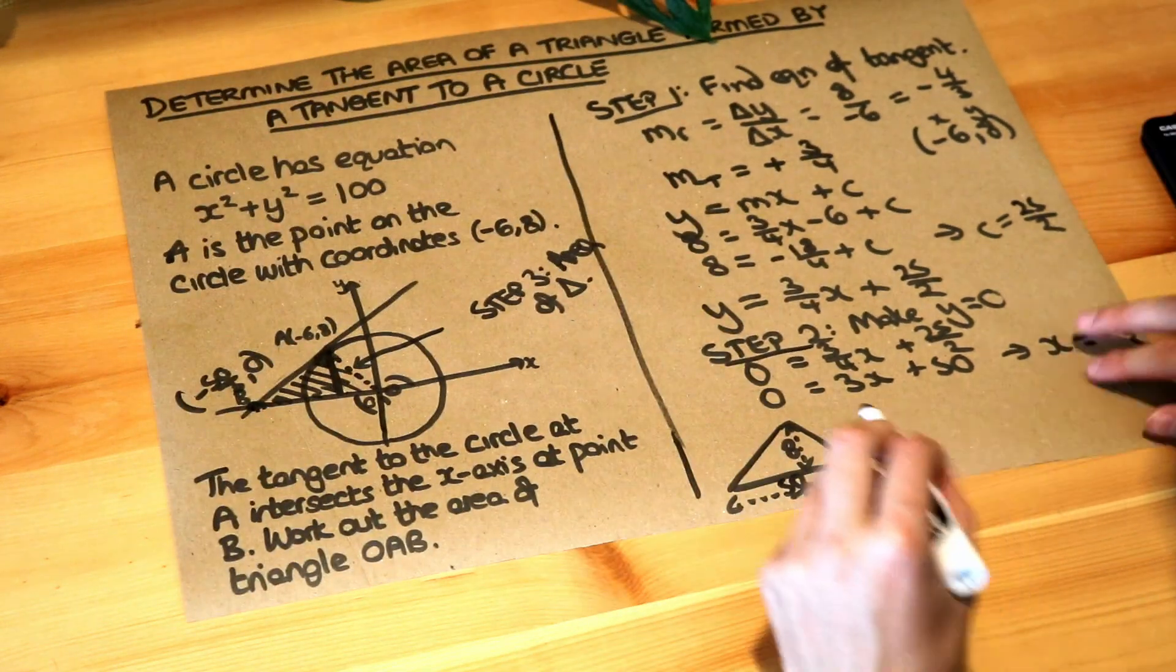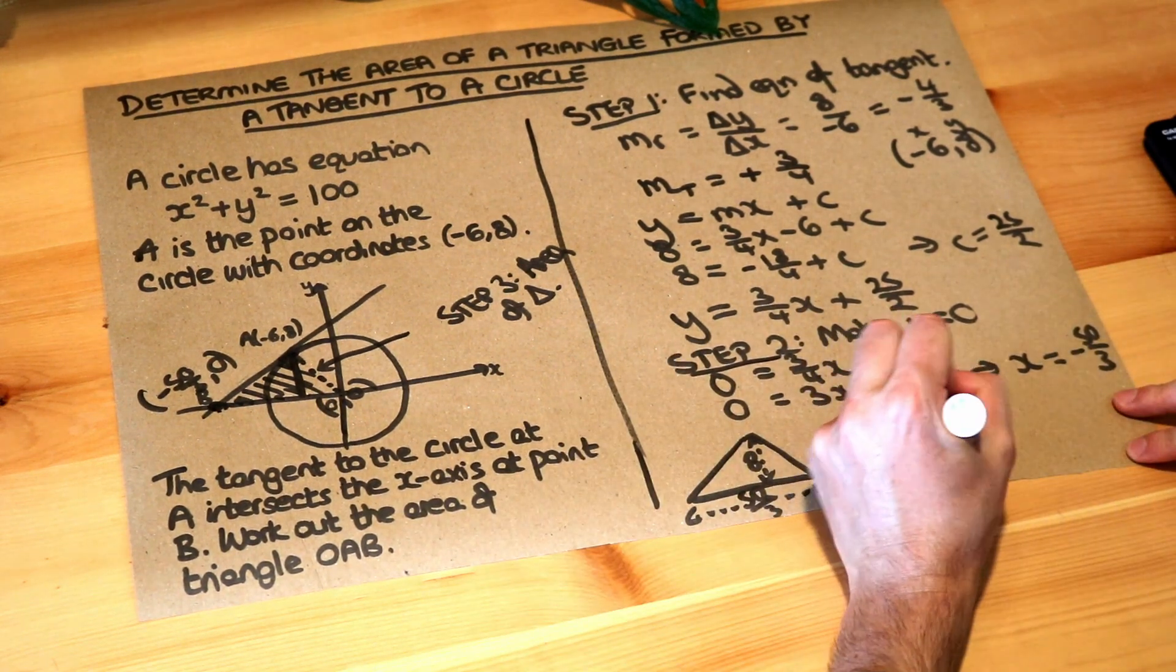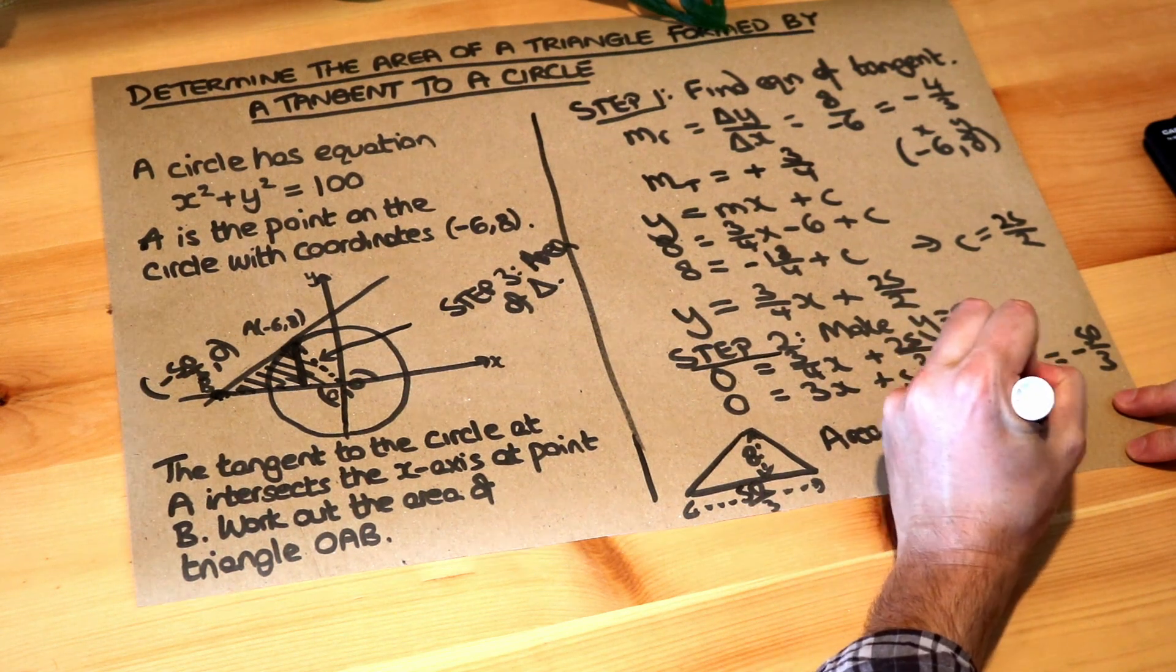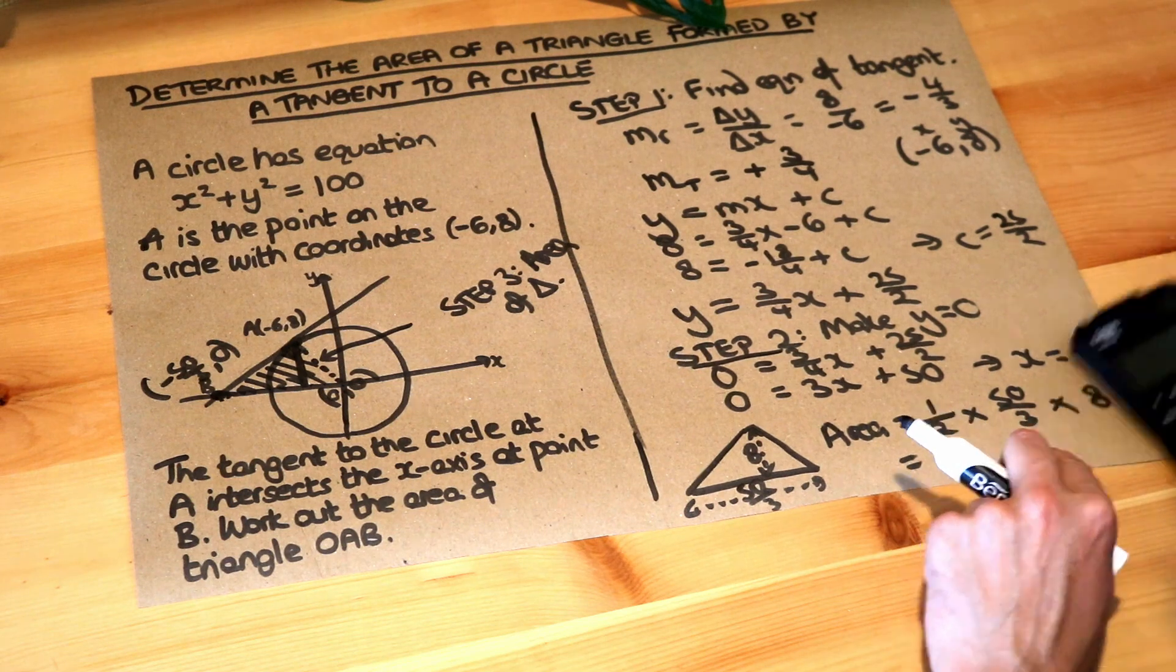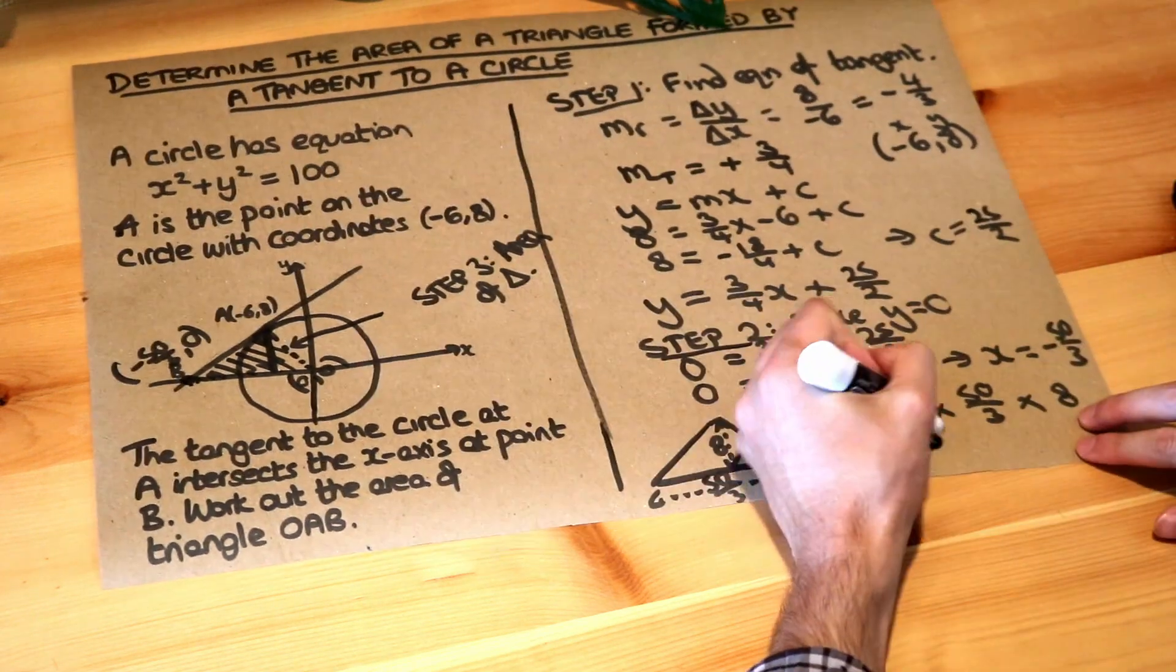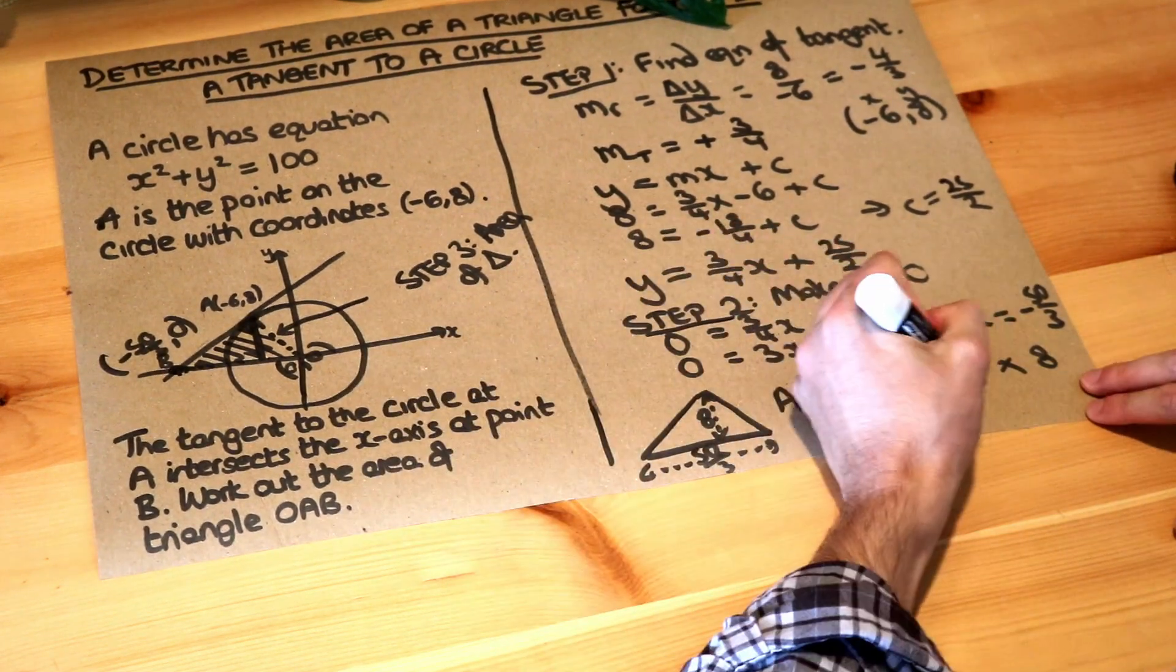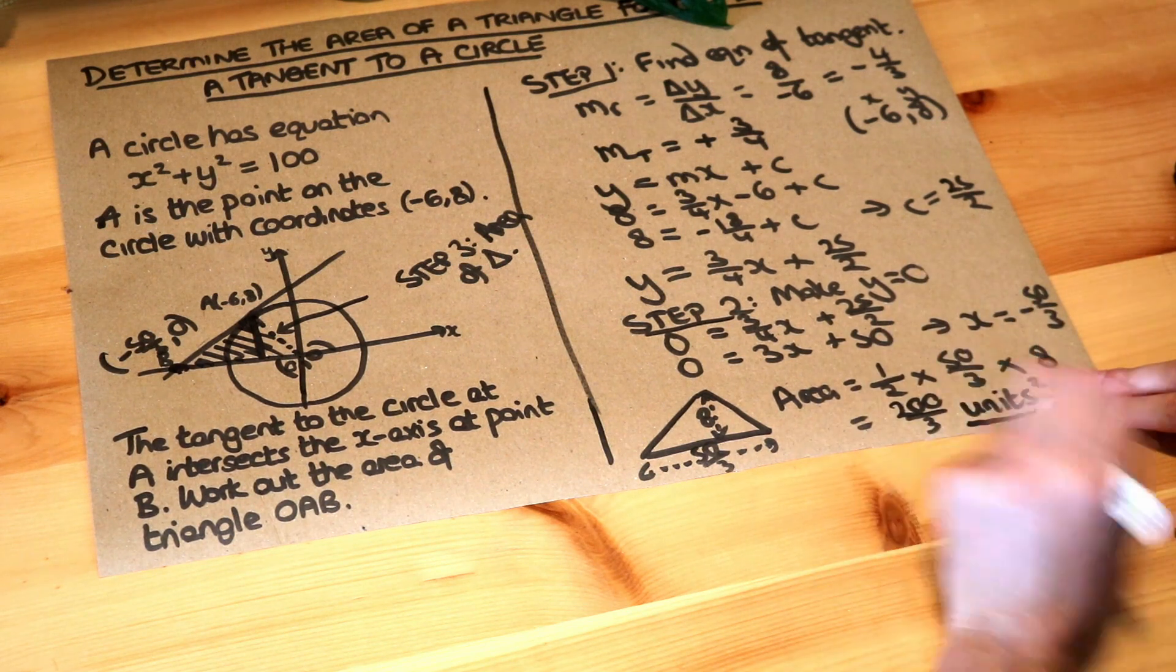So that then just gives us the area of, remember the area for triangles, half times base times height, so half times the base of 50 over 3 times by the height of 8. And if I just put that in my calculator, that gives me 200 over 3, and because it's area and we don't have a unit, I'm just going to write units squared. And that is the final answer.